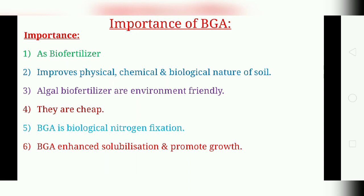Other uses of BGA include enhanced solubilization of immobile phosphate and producing growth-promoting substances in the soil. BGA also helps to improve the physical, chemical, and biological nature of the soil and is responsible for long-term soil fertility. BGA has been reported to reduce the pH of the soil and help retain exchangeable calcium. Thank you very much.